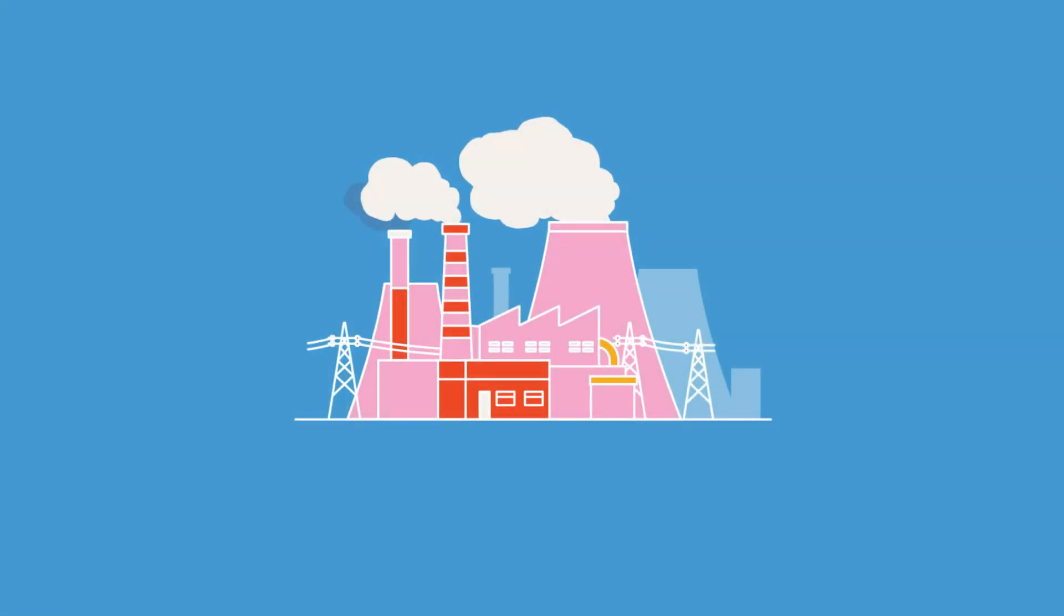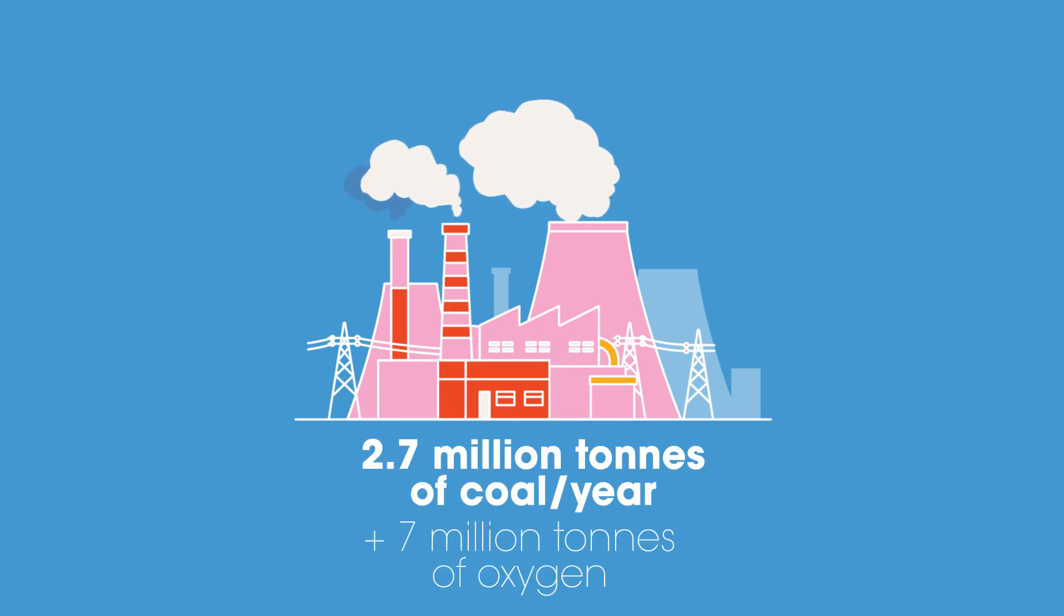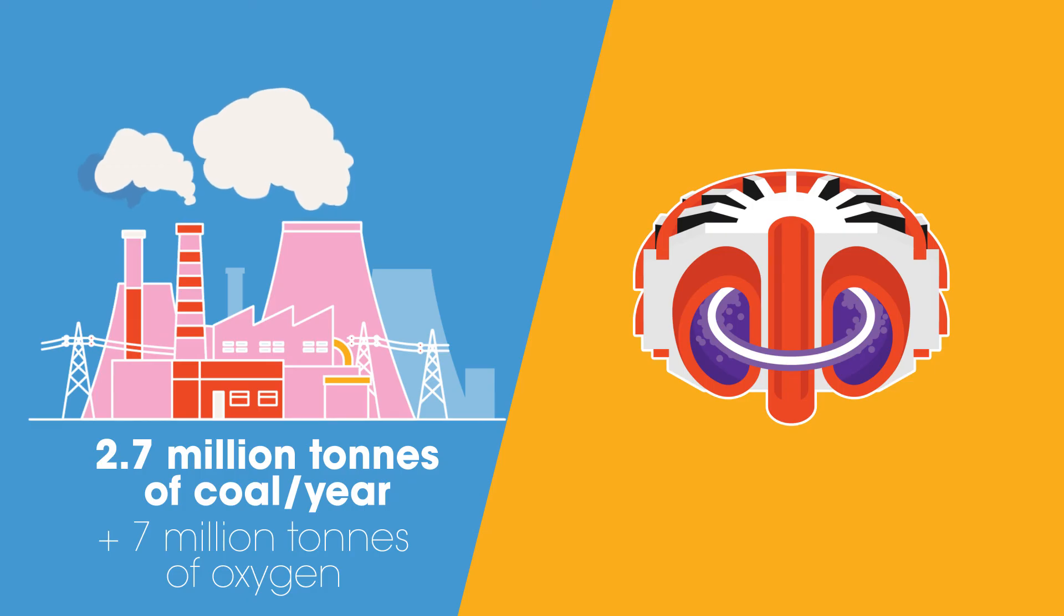Consider this, a 1,000-megawatt coal-fired power plant requires 2.7 million tons of coal per year. Whereas ITER would only require 250 kilos of fuel per year.